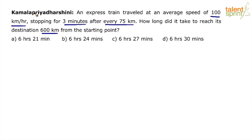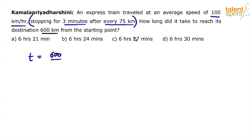Let us first neglect the part about stopping for 3 minutes after every 75 km. The simplified question becomes: an express train travelled at an average speed of 100 km per hour — how long will it take to reach a destination 600 km away? Speed and distance are given, so we find time. Time equals distance divided by speed: 600 km ÷ 100 km/h = 6 hours. The train will take 6 hours to cover 600 km.